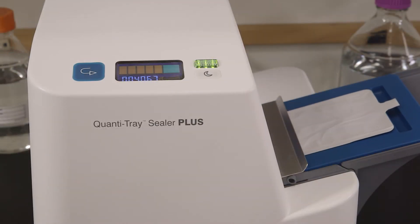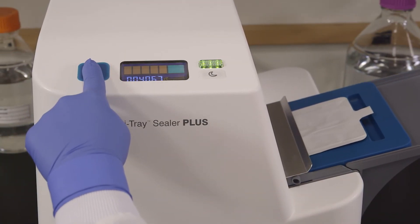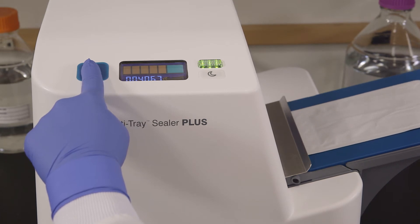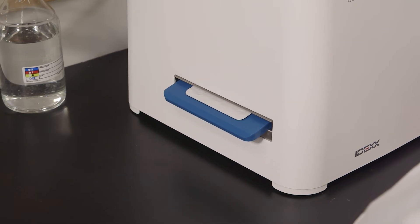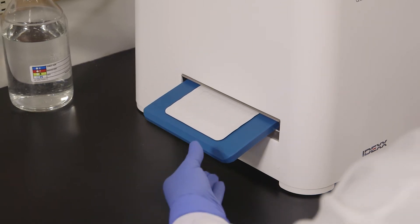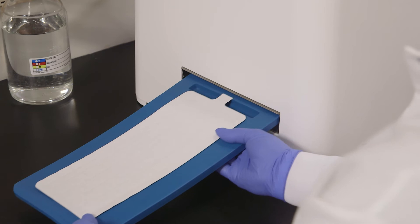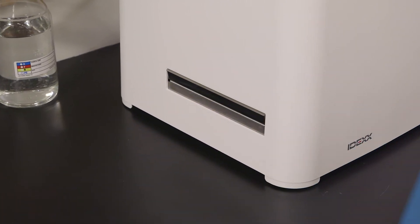If you need to reverse the motor press and hold the reverse button. However do not reverse the motor if the rubber insert is completely inside the sealer. The sealer distributes the sample mixture into the Quantitray wells, seals the wells and partially ejects the sealed tray. Remove the rubber insert and tray from the sealer.